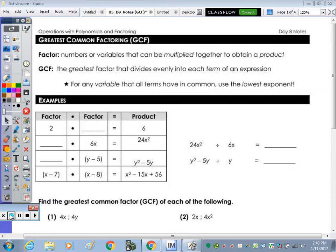At the top of the page, it describes what a factor in GCF is. So factors are numbers or variables, because variables represent numbers, that can be multiplied together to obtain a product. So I want to write factor times factor equals product. If it's a GCF, a greatest common factor, then it divides evenly into each term.